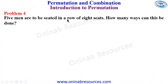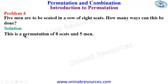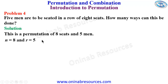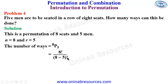Problem four: 5 men are to be seated in a row of 8 seats — how many ways can this be done? In our solution, this is a permutation of 8 seats taking 5 men, so n = 8 and r = 5. The number of ways will be 8P5 = 8! / (8 - 5)!.